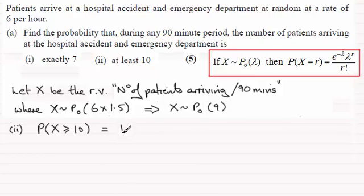So what we do is the converse - we do 1 minus the probability that just up to 9 patients arrive at the hospital in any 90 minute period. So it's 1 minus the probability that X is less than or equal to 9.